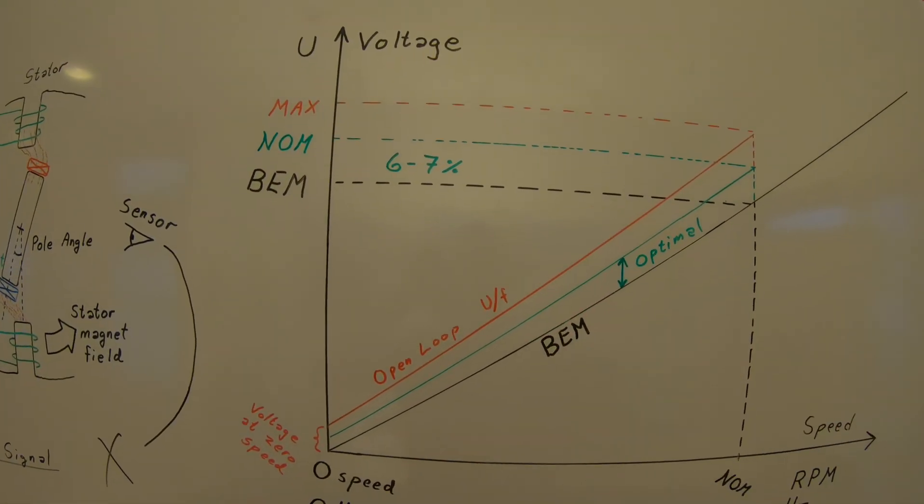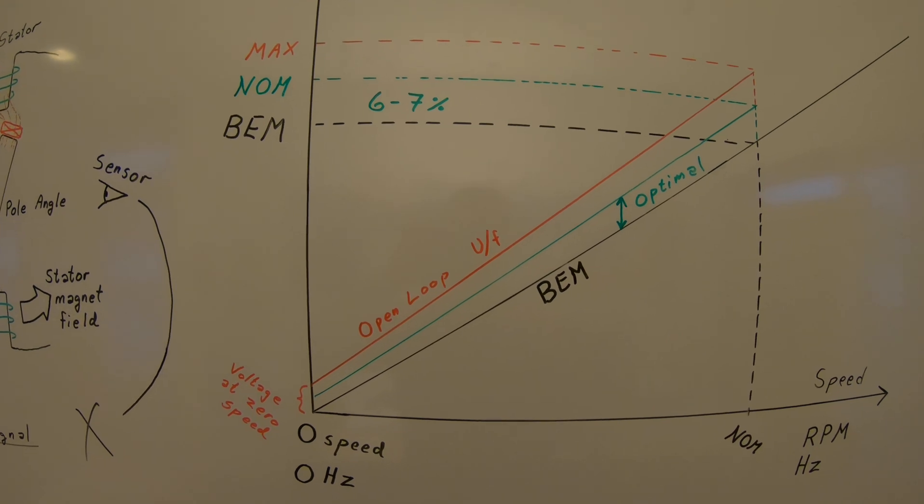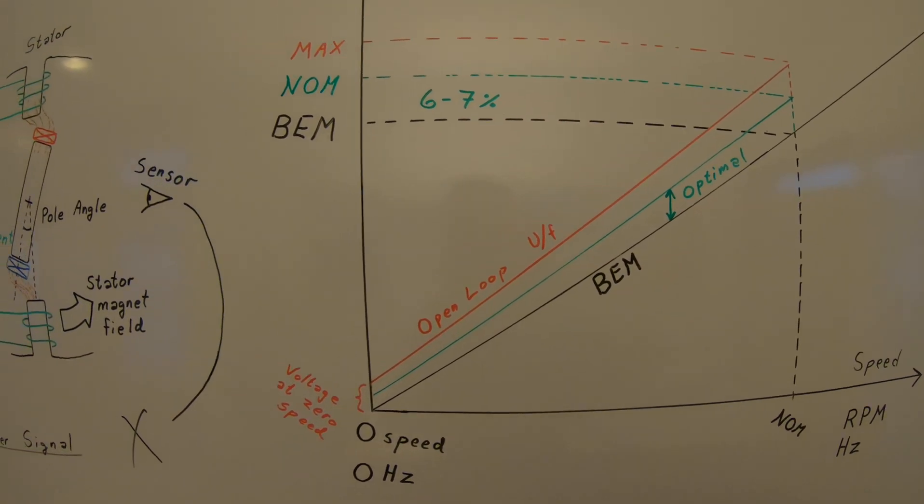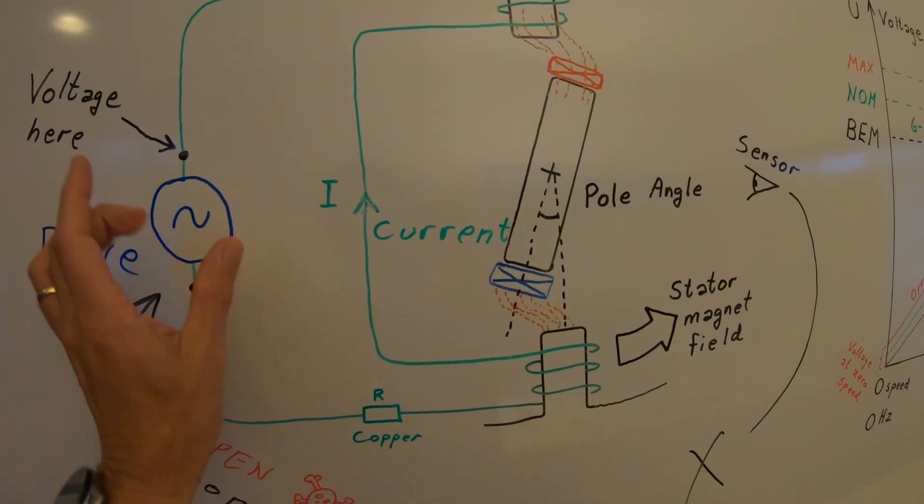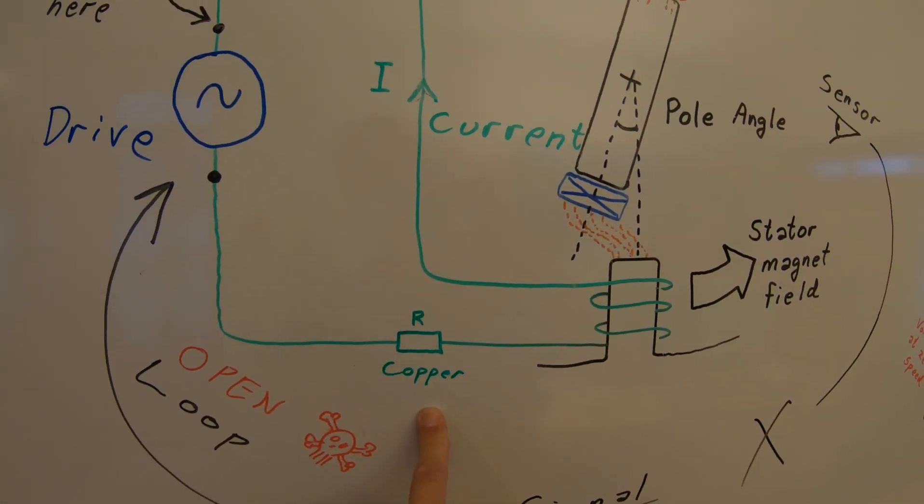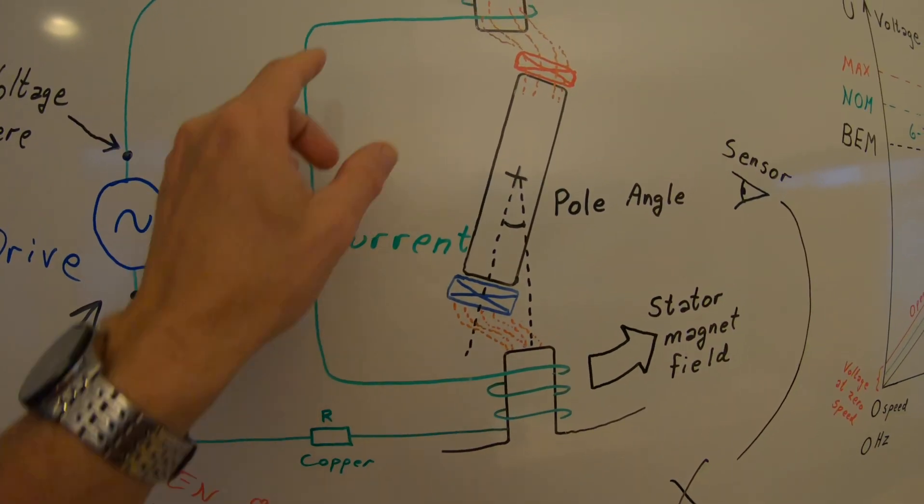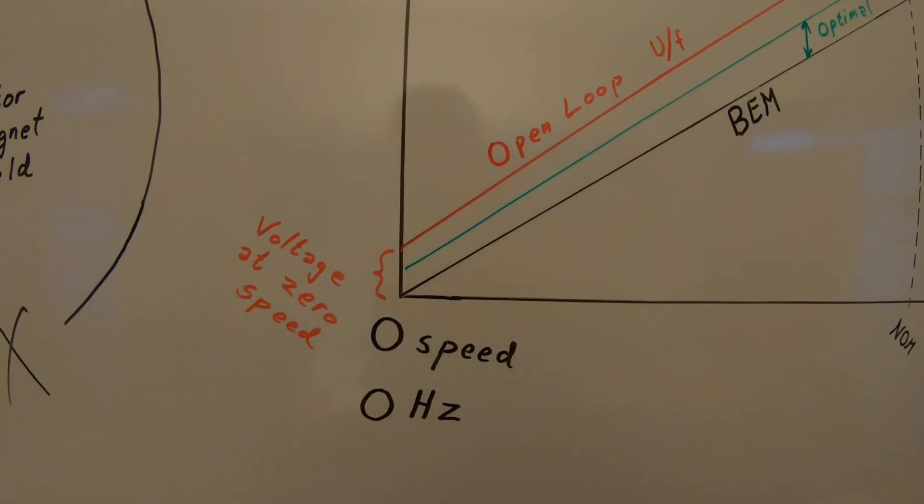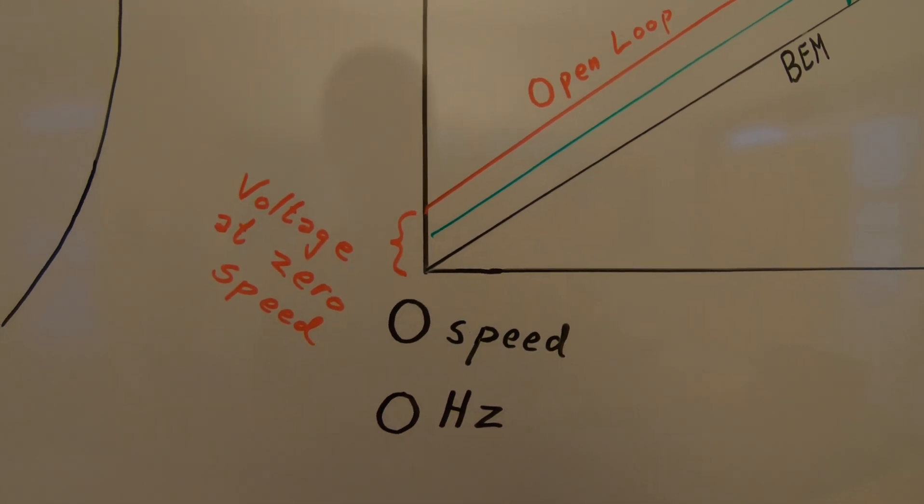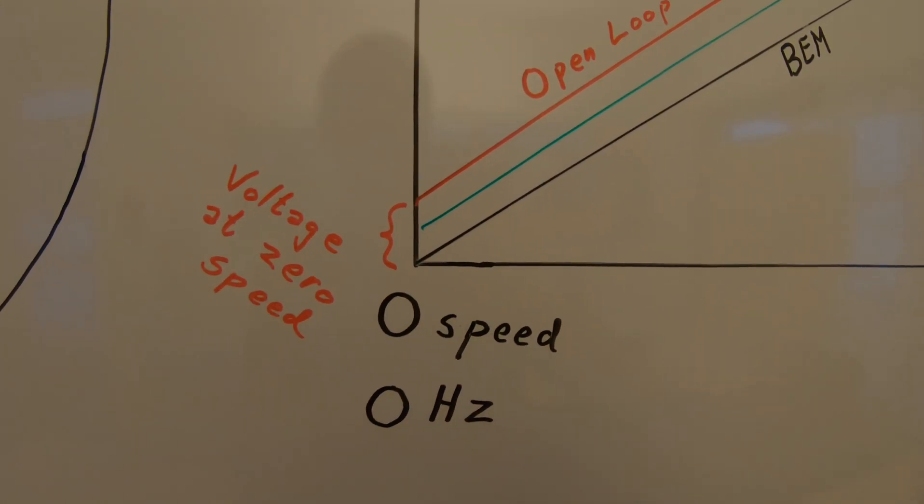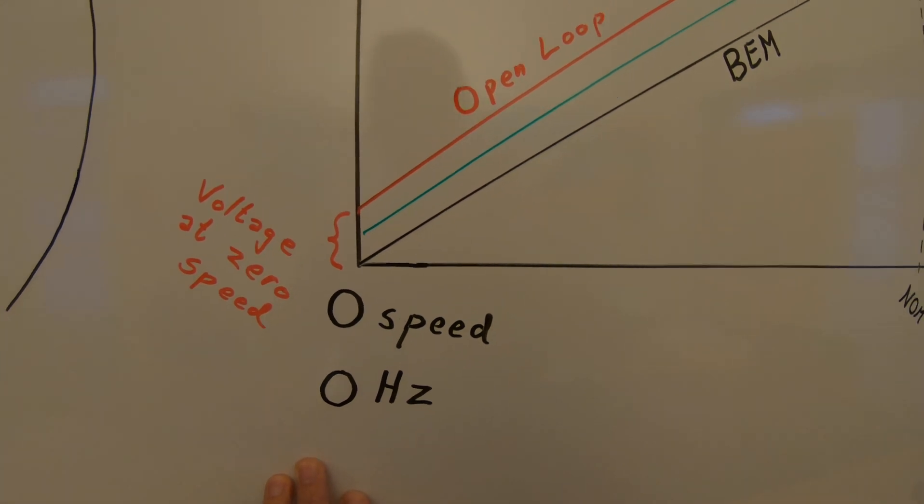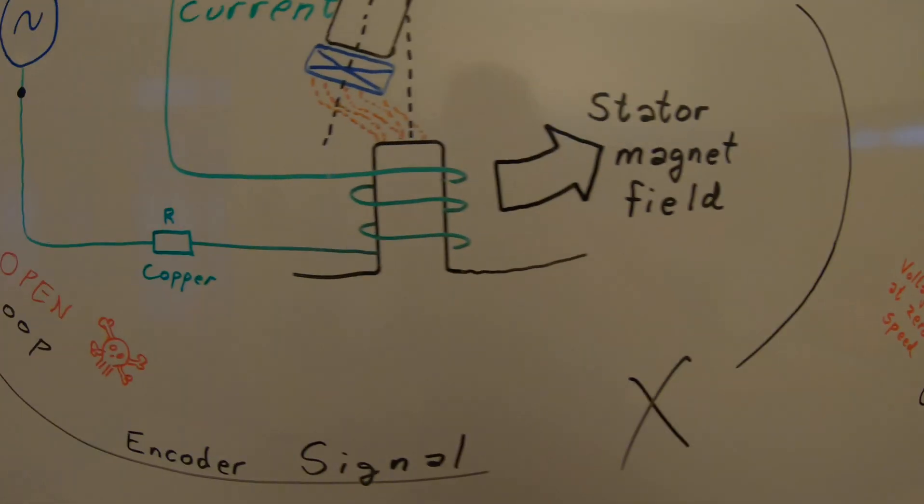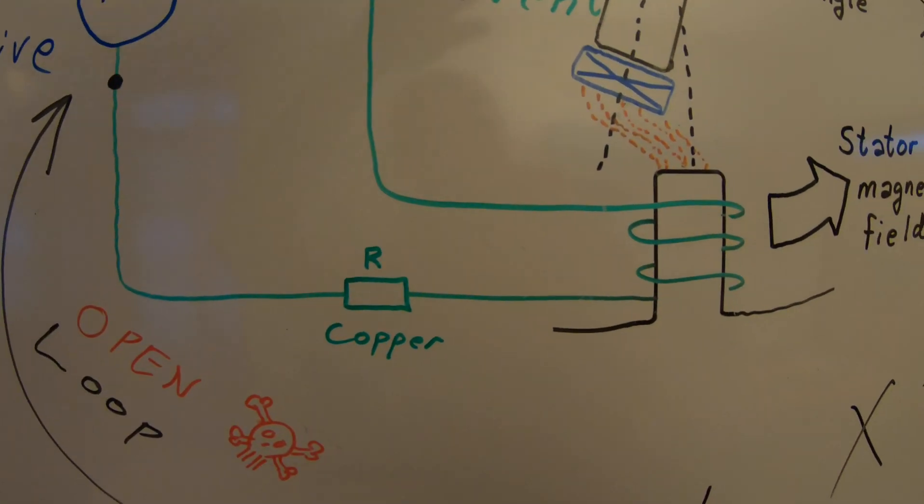Tweaking the UF curve can be done manually or you can do an identification run without rotation. Then the drive will measure what is the real resistance in your motor cables and the stator windings. And it will come up with a curve. Especially in the low speed area, in the zero speed area. This is quite critical because at zero speed the impedance in the motor is only the resistance in the circuit.